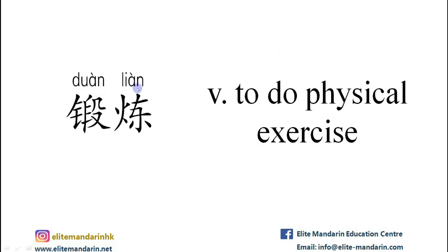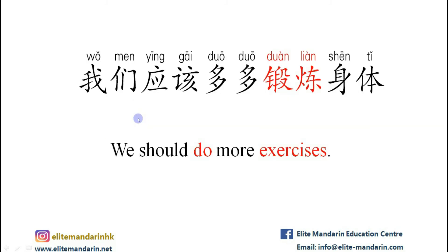锻炼 — it means to do physical exercise. The example: 我们应该多多锻炼身体。 我们 (we), 应该 (should), 多 (more), 锻炼 (do physical exercise), 身体 (body). We should do more exercises.